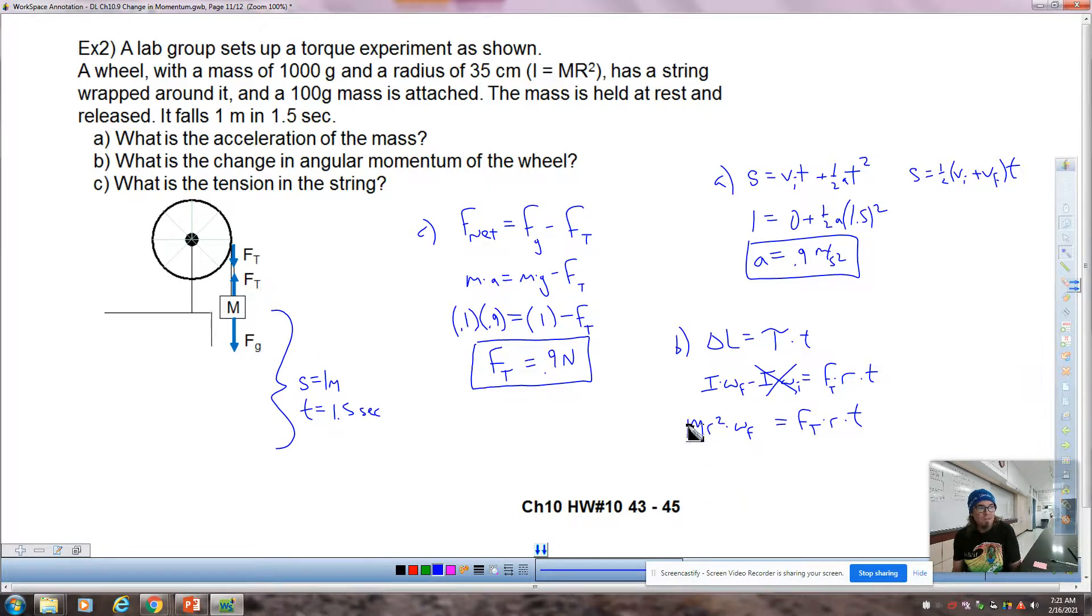Mr squared times omega F equals Ft times R times T. I don't believe I've left anything out. Our mass, our big mass of the wheel is one kilogram. The radius of the wheel is 0.35 meters. Of course, we could have canceled out an R, but I've already wrote it down, so I'm just going to go with it. And then our tension force, we just found a radius again at 0.35, and it fell for 1.5 seconds. So, that was the whole time that the string was pulling down on the wheel. Okay?